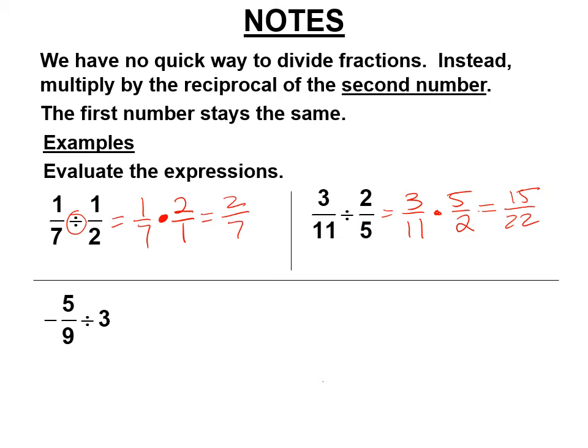Negative 5 9ths divided by 3. Leave the first number. Multiply by the reciprocal of 3, 1 3rd. Still no canceling. One negative in the problem. We're leaving that. 5 times 1 is 5. 9 times 3 is 27. It is negative 5 27ths.